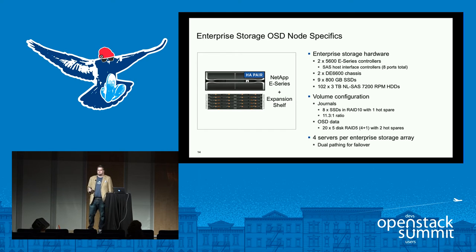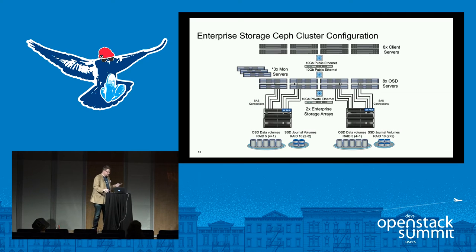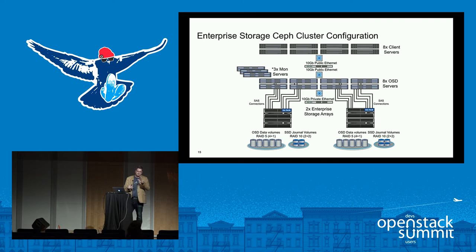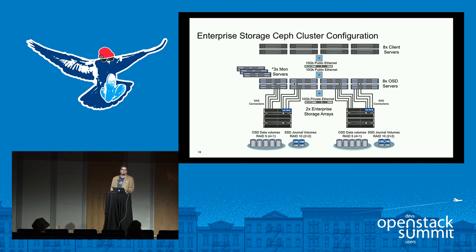We connected to the servers using serial-attached SCSI in a direct-connect configuration. Our E-Series has eight SAS ports, and since we need failover that means two ports per server across two controllers — so eight divided by two means we can only have four servers directly attached. That means our eight servers are split: four connected to one E-Series pair and four connected to another.